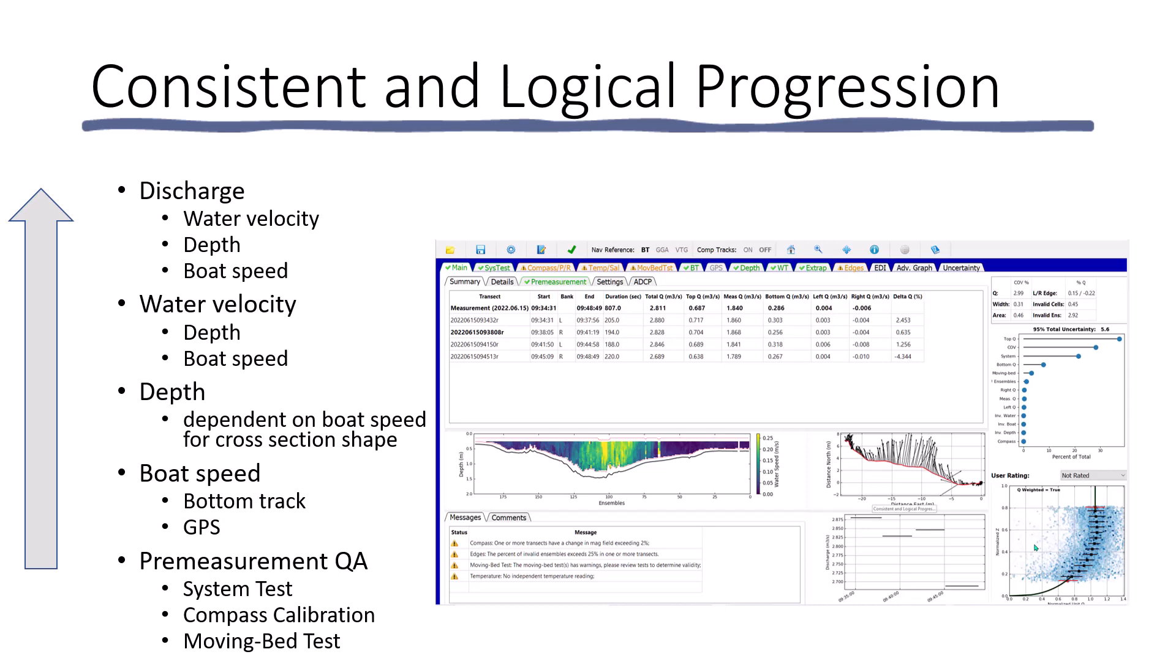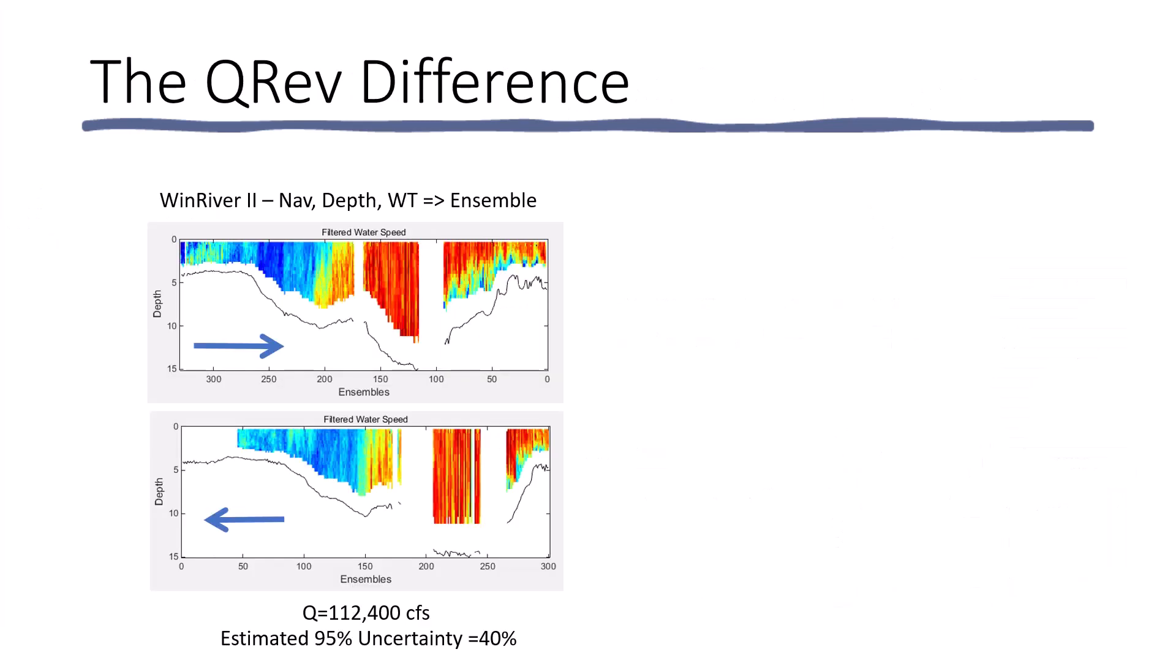Now I would like to show you an example of how the different algorithms can make a substantial difference in the final discharge, particularly in the presence of invalid data. The data you're looking at on this screen was collected during the flood. It was collected from a tethered boat off the downstream side of a bridge.